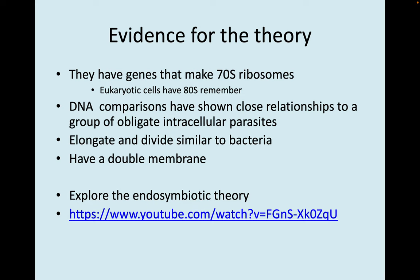Evidence to support this theory is that mitochondria and chloroplasts have genes that make 70S ribosomes. Remember, eukaryotic cells all have 80S ribosomes, so the ribosomes in chloroplasts and mitochondria are prokaryotic ribosomes. DNA comparisons have shown close relationships to obligate intracellular parasites. They elongate and divide similar to bacteria, and they have a double membrane — their own prokaryotic membrane plus the eukaryotic membrane picked up when entering the original cell.